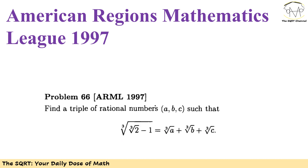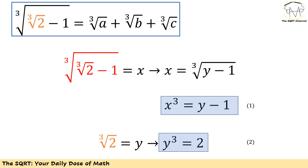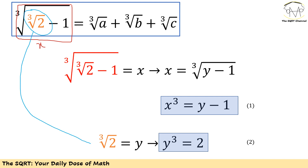For the sake of completeness, this is the original problem — as you can see, everything is as we explained. Now we are going to deep dive into the solution. I'm going to start by using x for what I have on the left hand side, and y for the third root of 2. Then x cubed equals y minus 1 (equation 1), and y cubed equals 2 (equation 2). Because we are going to have a lot of equations, I'm going to number them.